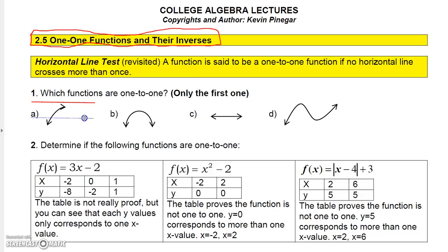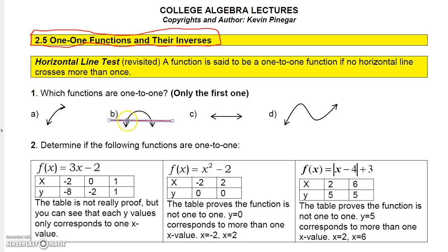This right here is not one-to-one because the horizontal line crosses it at two places, and this is not one-to-one because the horizontal line crosses it at more than one place.